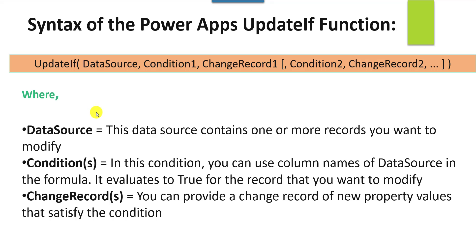The data source contains one or more records you want to modify. The condition can use column names of a data source in the formula — it evaluates to true for the records you want to modify. The change record provides new property values that satisfy the conditions.